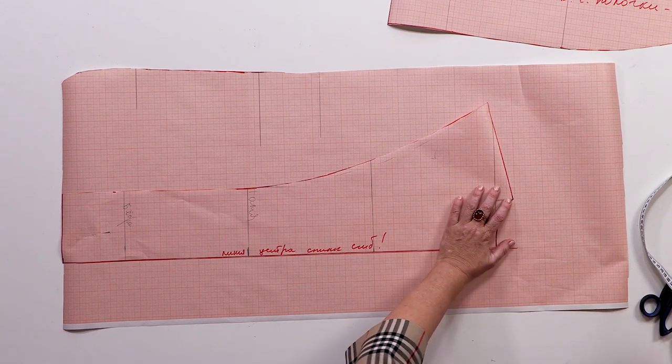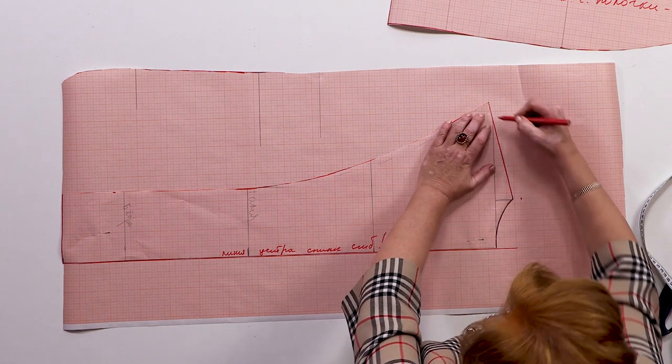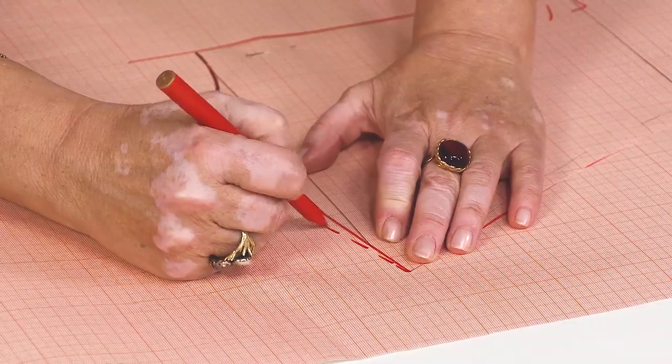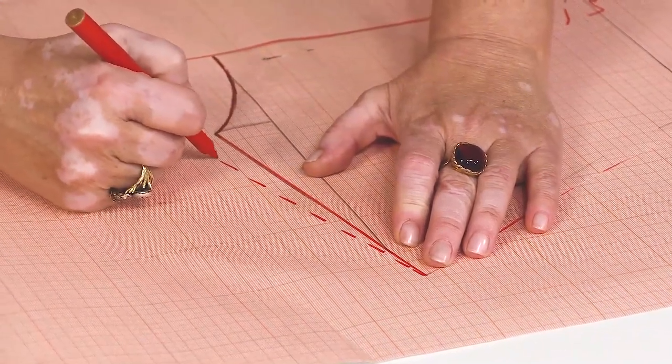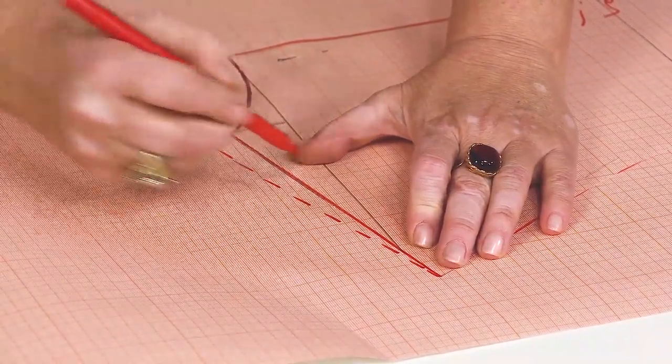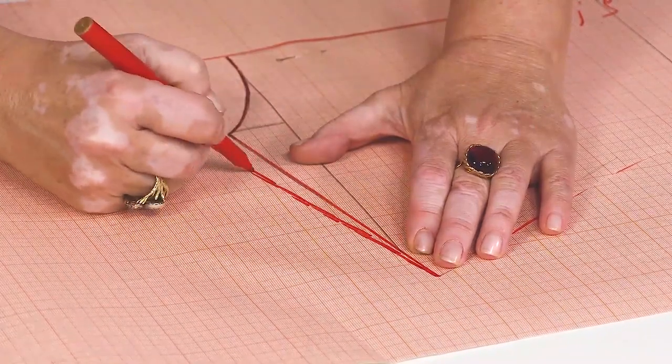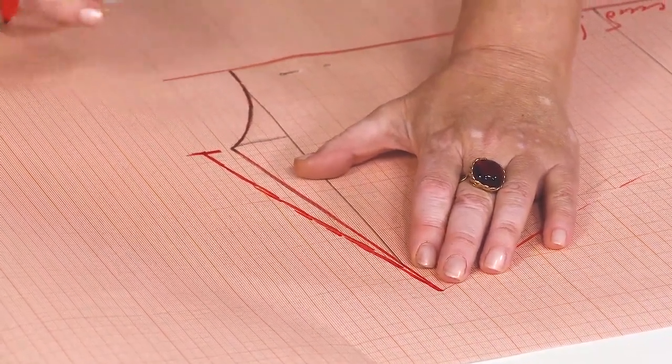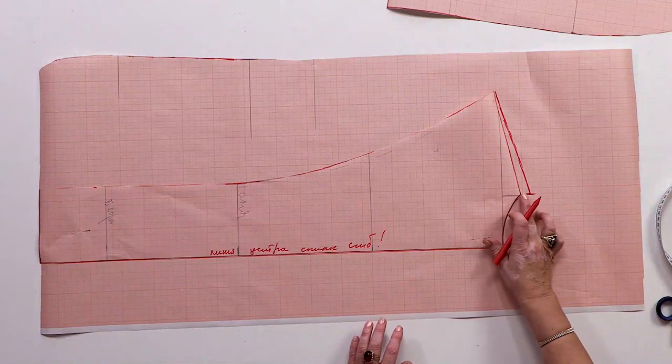First, I need to measure and mark 1.5 cm from the base of the neck and connect this point with the shoulder top to draw shoulder slope. Do not forget about the balance extension. In this case, it's 1.5 cm.